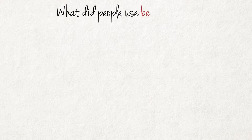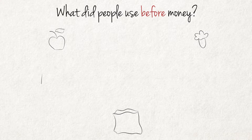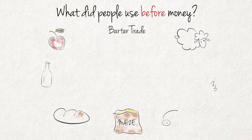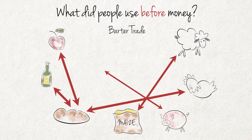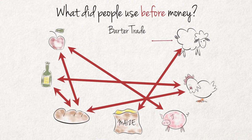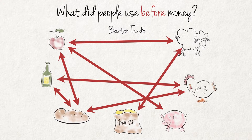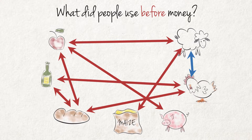What did people use before money? For many years, before money was placed in circulation, barter was the only form of trade. Goods were exchanged for goods — for instance, three bags of maize for one sheep. This was a slow and inefficient way of trading, as the needs of people do not always correspond.